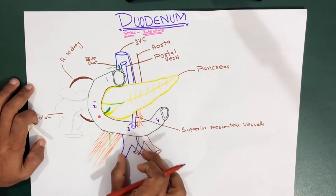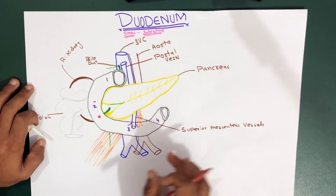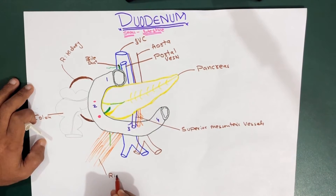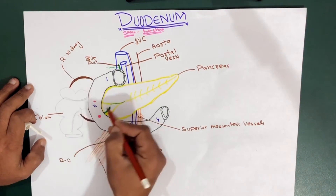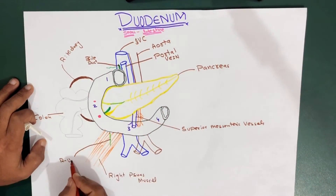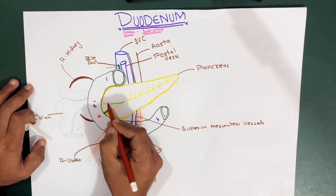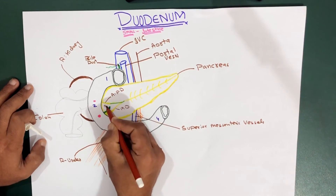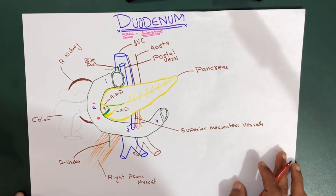Down here you can see the inferior vena cava going posterior to the pancreas and the duodenum, and this is the abdominal aorta. This muscle I've drawn is your right psoas muscle, and this structure in light green is the right ureter, coming from the hilum of the kidney, which is posterior to the second part of the duodenum. Here we also have the bile duct, the pancreatic duct, and the accessory pancreatic duct. The bile duct and pancreatic duct join together to form an ampulla, which ends at the major duodenal papilla.